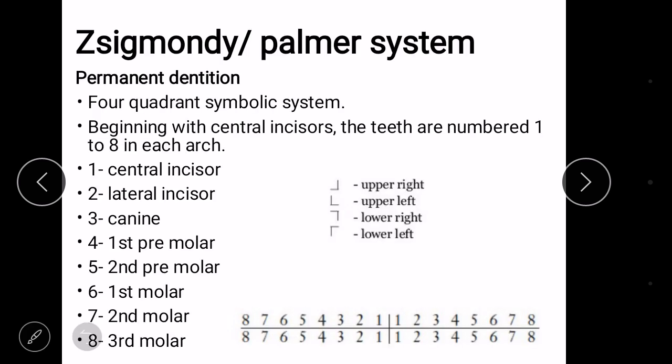Same thing is followed in the permanent dentition. Here numbers are used instead of alphabet, number 1 to 8, which denotes central incisor, lateral incisor, canine, premolar 1 and 2, molar 1, 2, and 3 respectively.